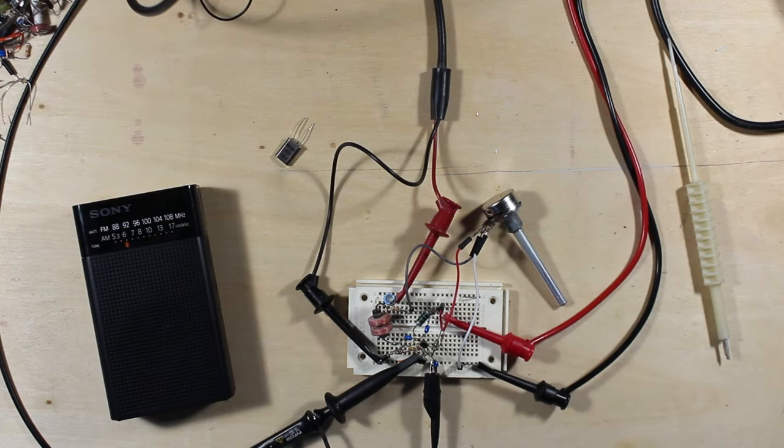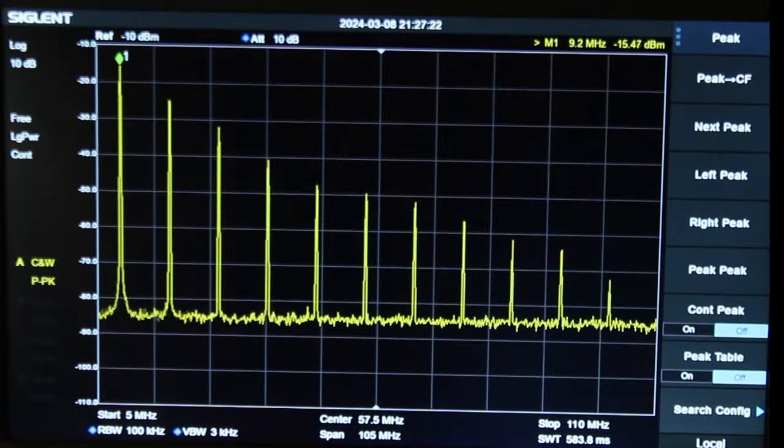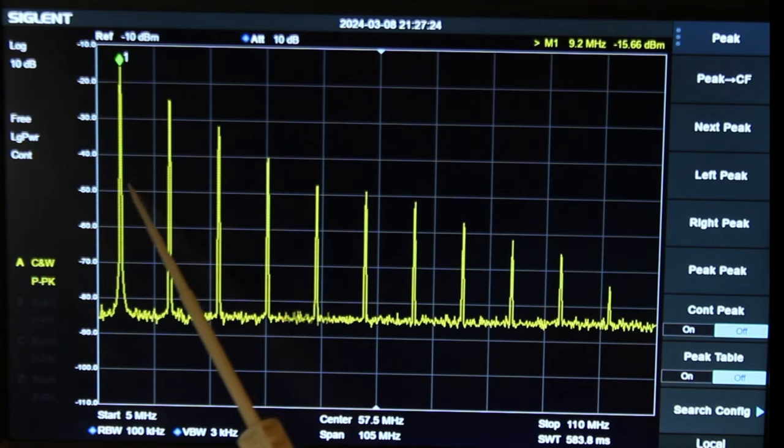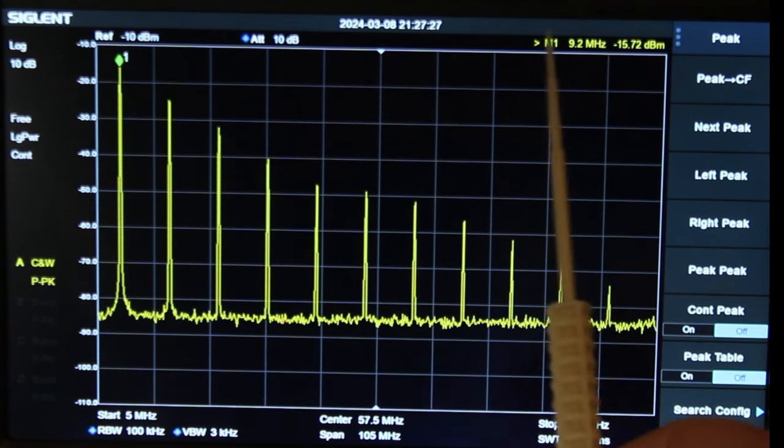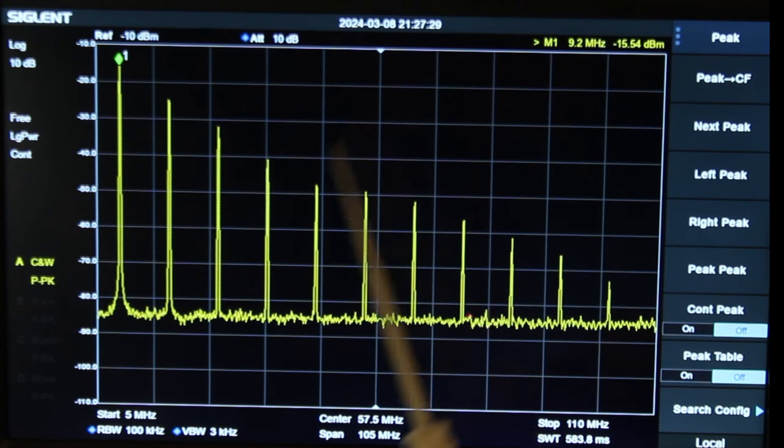So let's go have a look on the spectrum analyzer. So on the spectrum analyzer here, we can see our primary frequency, 9.2 MHz approximately.